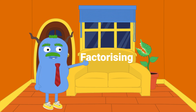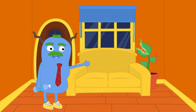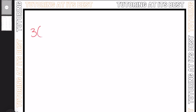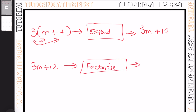So what is factorizing? Well, factorizing is the inverse of expanding brackets. Let's draw a function machine to demonstrate this. We take 3 and then brackets m plus 4, and then we expand this. As we know, we use our FOIL method, which will give us 3m plus 12. So the function machine multiplies everything in the bracket by 3. However, if I reverse this — and that is to factorize — the function machine does the opposite of what we did when expanding the bracket.